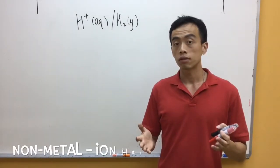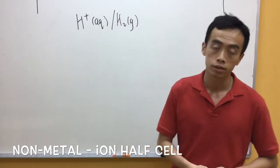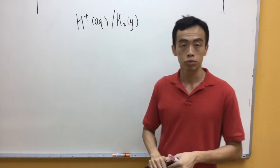Now for the second type of half-cell, a non-metal-ion half-cell, we use our H-plus, H-2 gas as an example. So drawing this half-cell is also pretty simple.